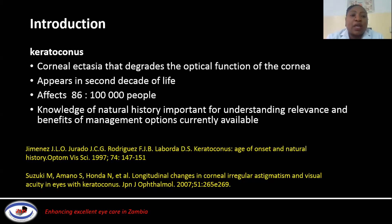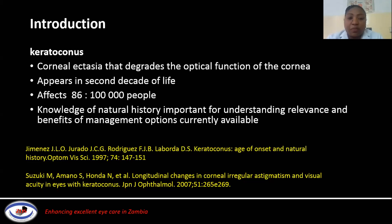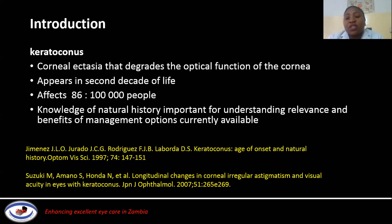Keratoconus, as we know, is the corneal ectasia that degrades the optical function of the cornea. Usually in most patients, it will appear in the second decade of life. This is when we see most of our patients. It affects about a ratio of 86 patients in 1,000 people. So it's very important for us to have knowledge of the natural history of keratoconus, as this will help us understand the different treatment modalities currently available, and how best we can apply these modalities based on understanding how this disease will progress if there are no interventions in place.